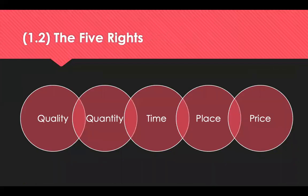We're now going to look at the five rights that should always be considered when making a purchase. We need the right price, quantity, quality, time and place. The right price covers factors that can affect all of the other five rights, such as quality and quantity — it's quite an elastic one as they can all pull on the price. Quality refers to quality standards: make sure it's not too high or too low.